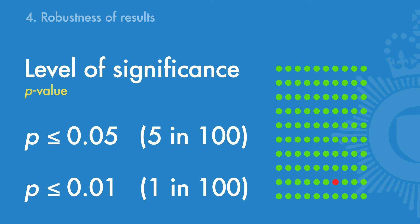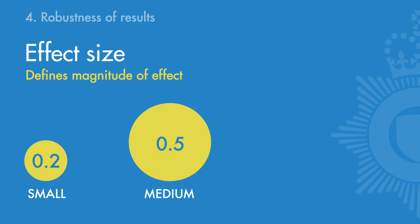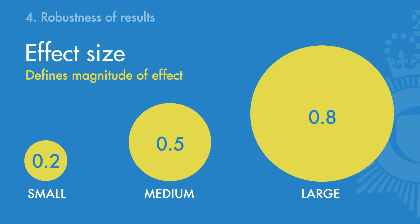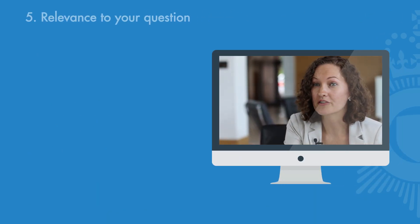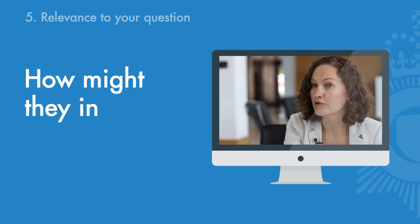Statistical significance tells you whether there is a relationship, but effect size tells you the magnitude of the effect. A general rule of thumb for studies comparing mean differences is that an effect size of 0.2 is considered small, 0.5 is considered medium, and 0.8 is considered large. Step five is to return to your question of interest and consider how these results might be relevant to you and how they might inform your practice.